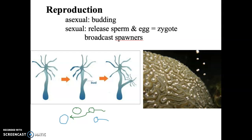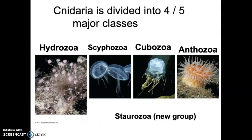Now we get into the fun stuff. We know the general characteristics and features of Cnidarians — let's take a look at them. Cnidarians are broken up into five major classes. We're not going to worry about the Starozoa; this is a group that's still being better understood. The four classes we're going to focus on are Hydrozoa, Scyphozoa, Cubozoa, and Anthozoa.